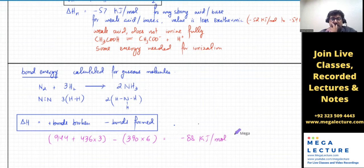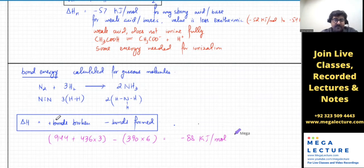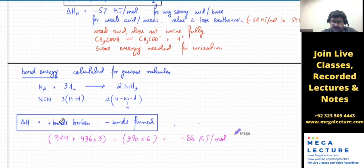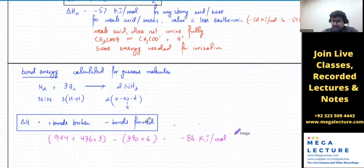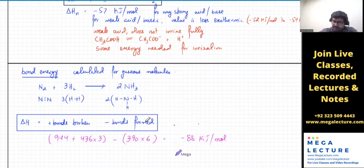Bond breaking is endothermic — positive value. Bond formation is exothermic — negative value. The bonds in the reactants are broken (positive) and bonds in the products are formed (negative). You can think of it as reactant bonds minus product bonds.